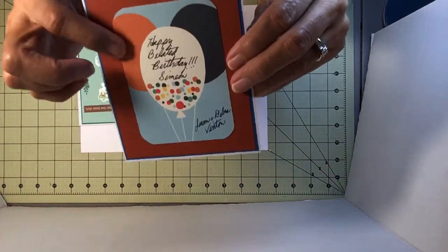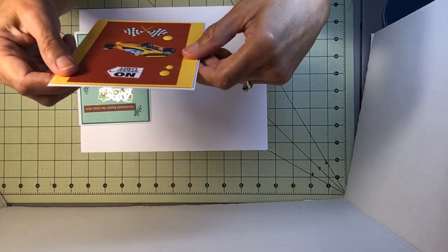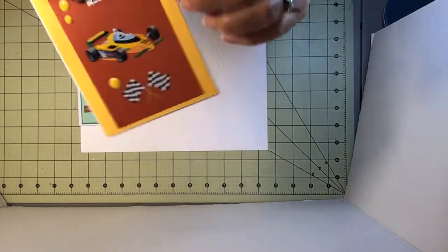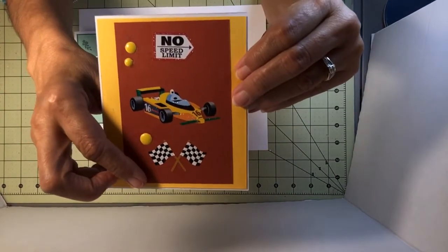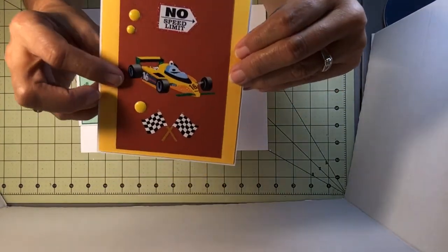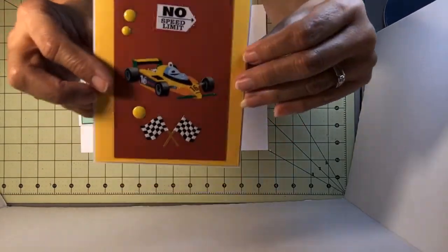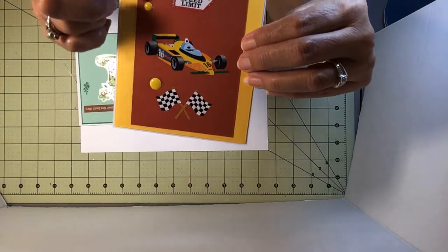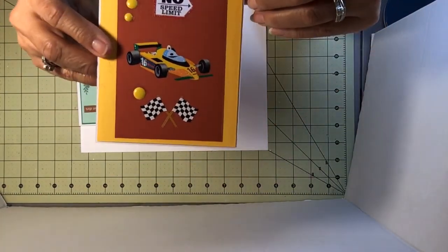That was a journaling card. And then I've added some stickers, no speed limit. Did put a checkered flag, no speed limit. And I added this car, race car. And I added some dots, enamel dots. I think that's what you call them.